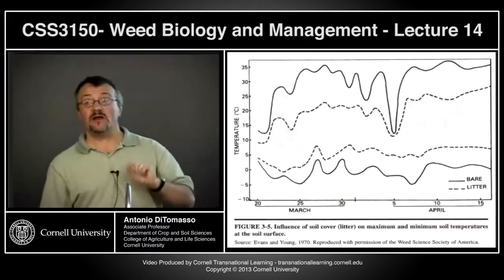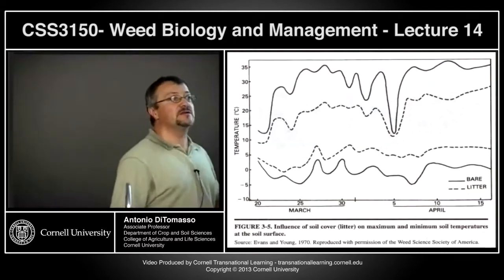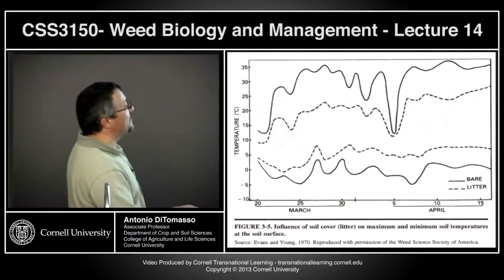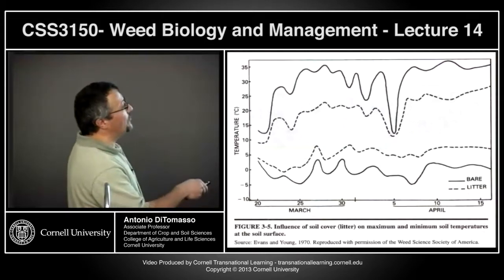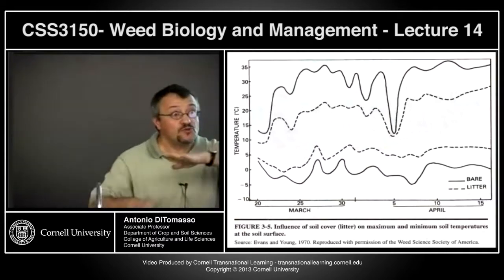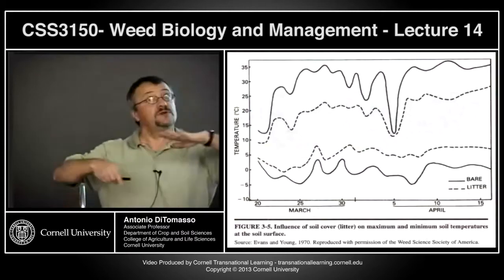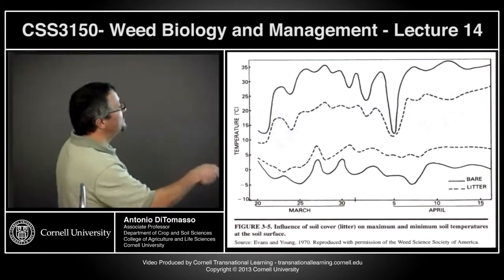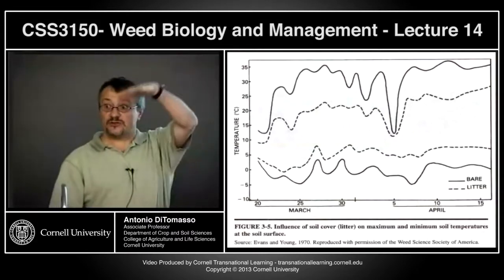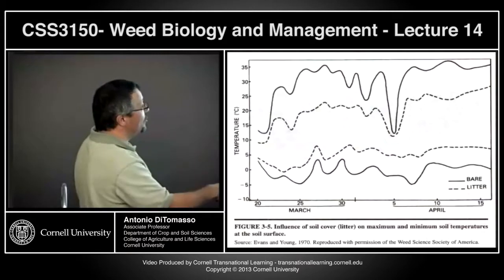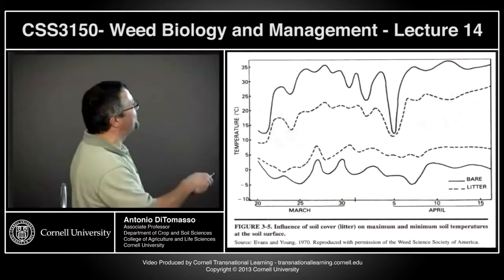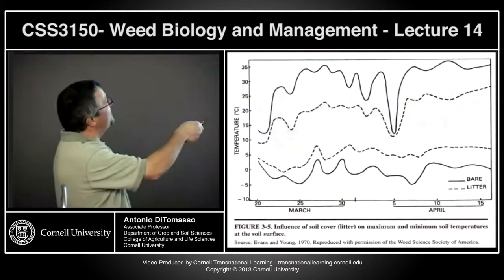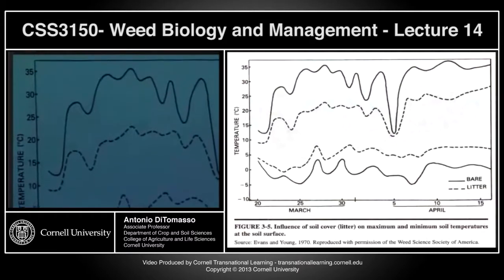A lot of growers here are concerned about no-till because of soil temperature. The solid line on this graph is bare ground - using a moldboard plow with five percent residue, it's really just bare soil. The maximum temperatures for bare ground follow air temperatures closely and heat up nicely. But look at what happens with litter: temperature maxima drop dramatically - you're at 15 degrees C versus 32 degrees C, about 60 versus upper 80s Fahrenheit.